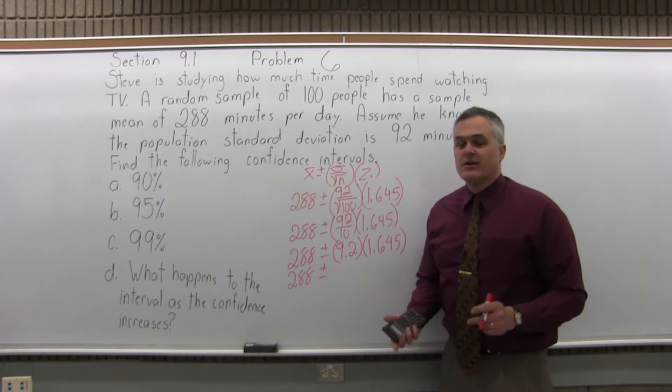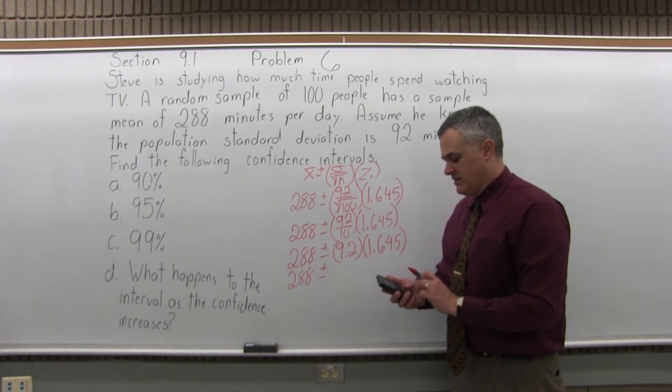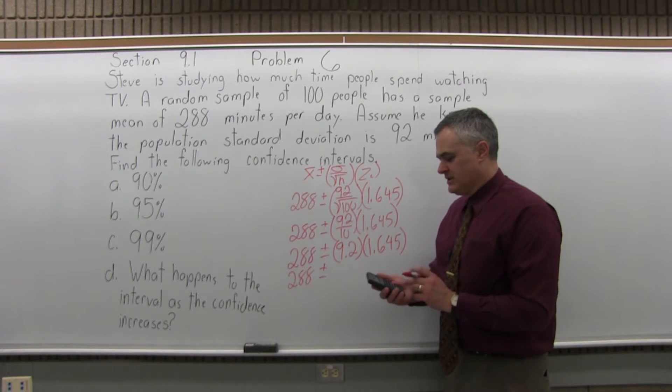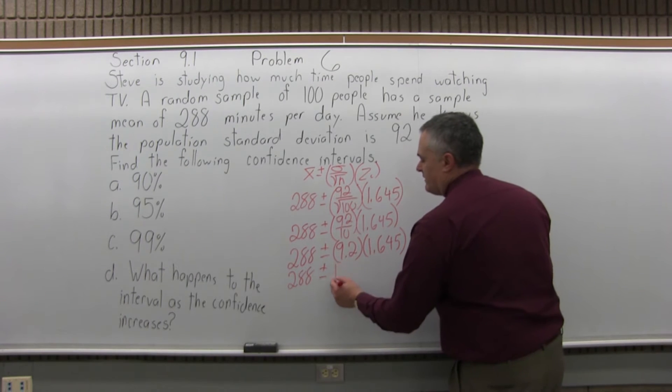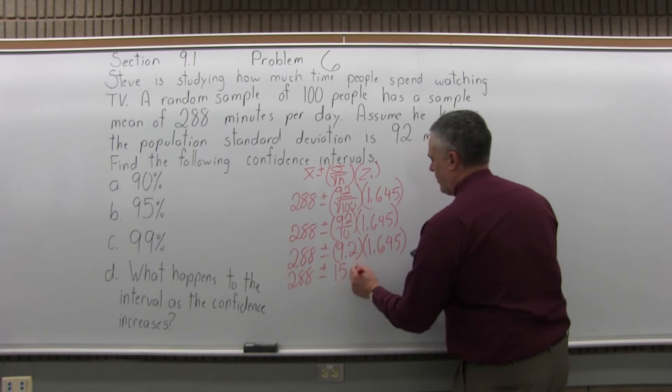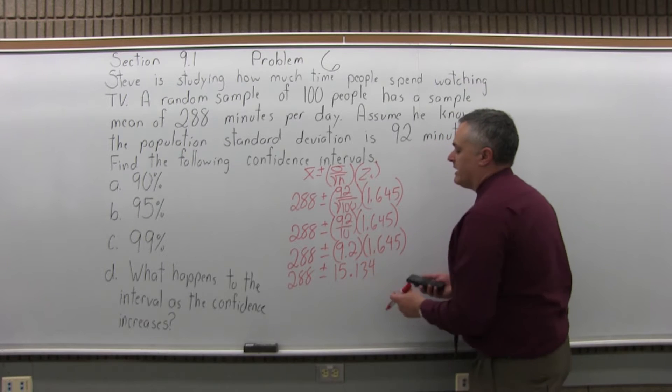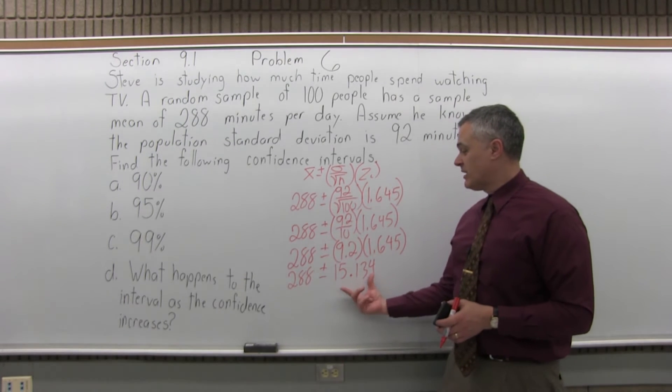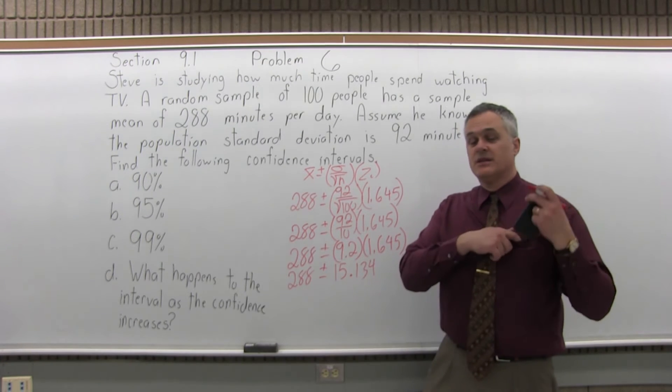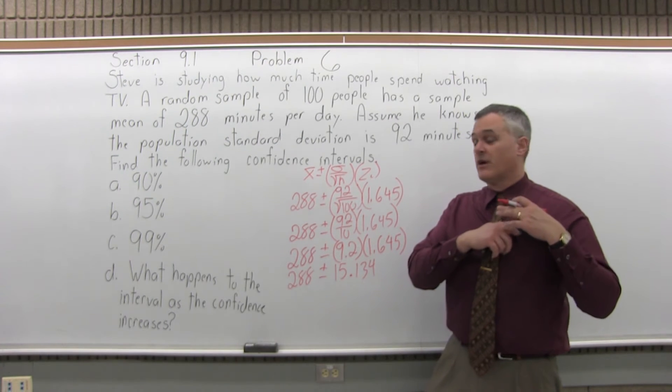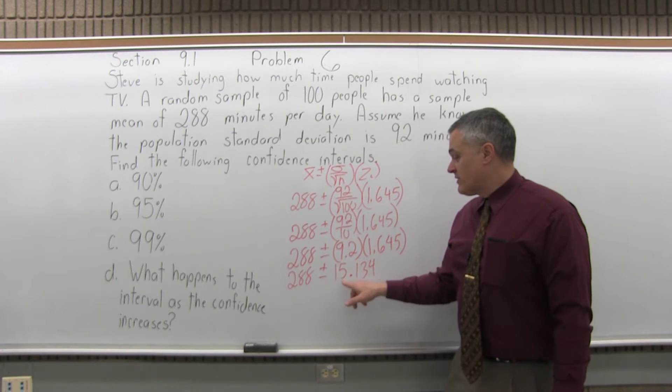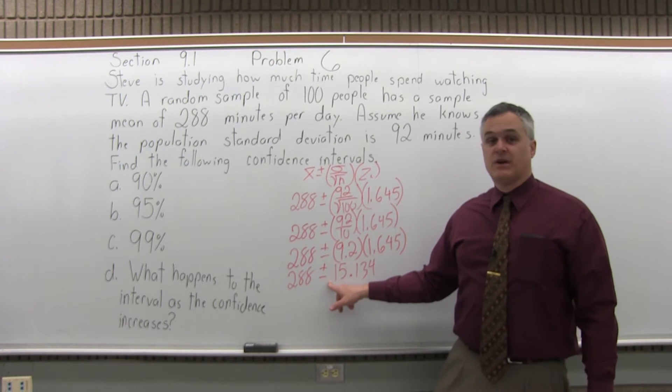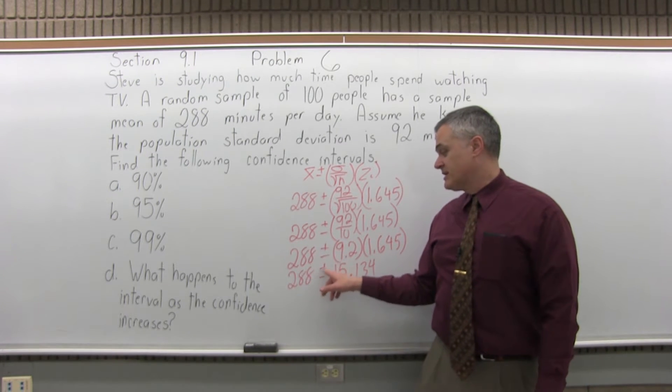Now multiply 9.2 times 1.645. Using the calculator, 9.2 times 1.645 equals 15.134. That's the margin of error. When you get down to one number after the plus and minus, the name for that value is the margin of error.